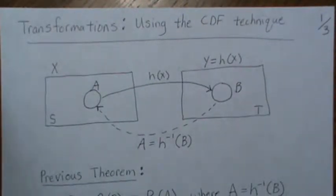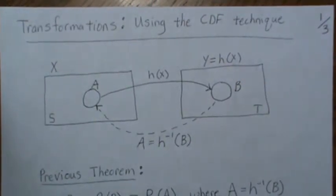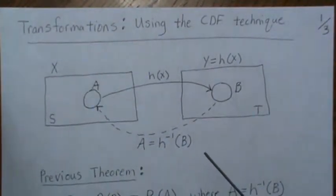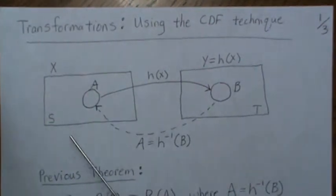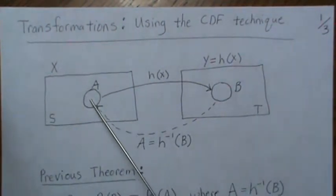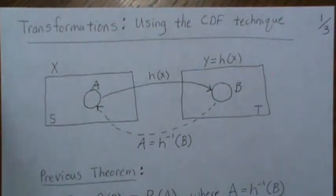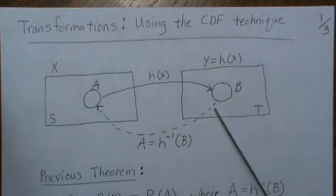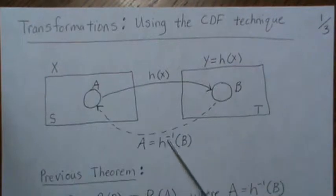This is the second video in a series called 'Transformations of Random Variables.' In this video we're going to look at the CDF technique, or the cumulative distribution technique. This picture describes every scenario we'll cover: we have a random variable X with domain S, a function that maps sets to sets — A goes to B — and we call this generically Y = H(X). The inverse image of B is A, meaning everything mapped to B is called the inverse image of B.